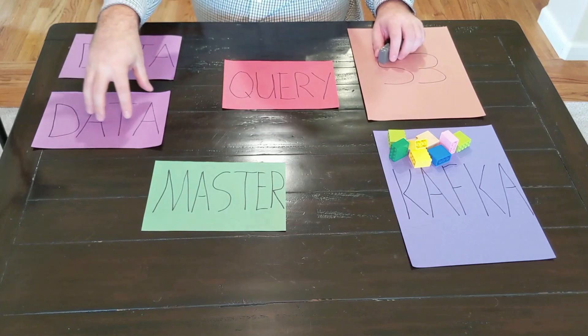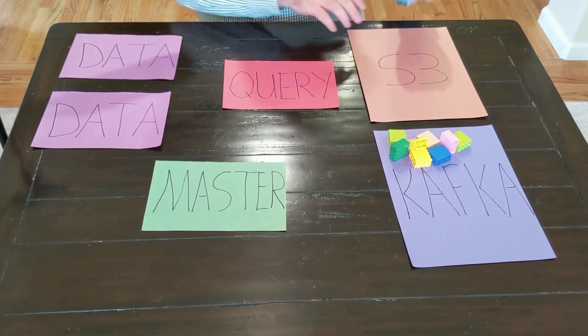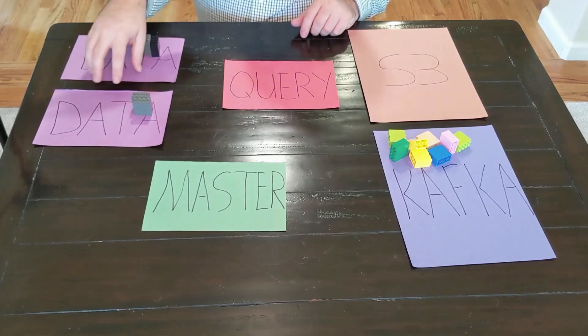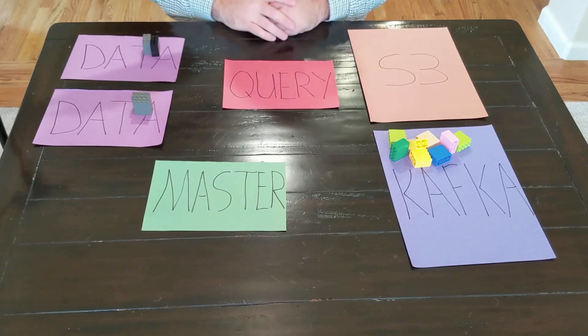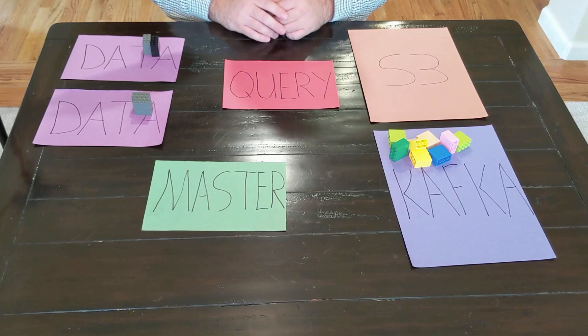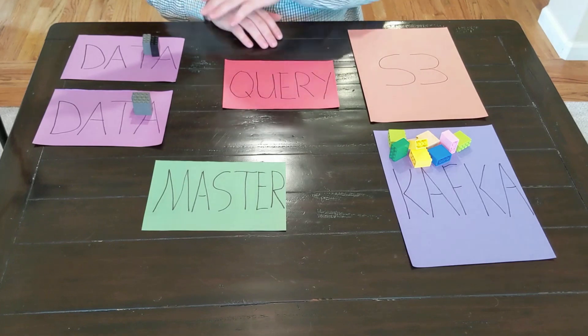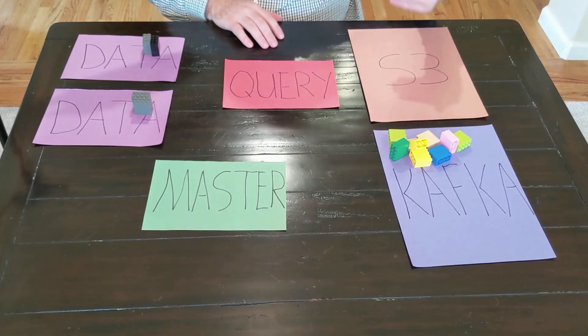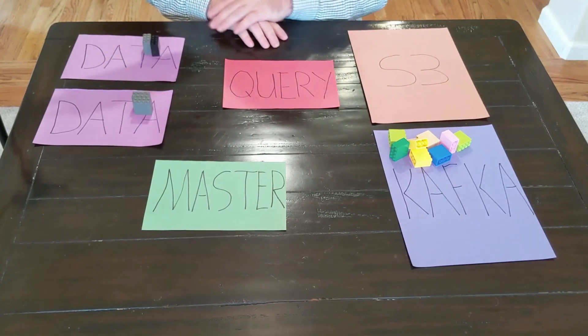And then these segments are then distributed out. So as we do this processing here on the data node, that's copied into S3. And then from there, that data, these segments, actually get distributed back out into the cluster. So once again, although we just see two different sheets here, or cards with data on them, we'd have many more in a bigger Druid cluster. So here we have our segments. These segments are distributed out. So that's what happens when we do batch ingestion. Once again, that batch ingestion happens from our data that is stored in our deep storage. It's processed by our data and then distributed out as segments.